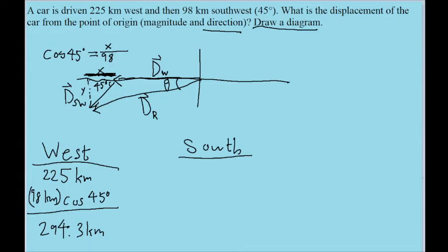But since we're looking at the vertical part, the y part now, we'll have to use the other trig identity, the other trig function, sine. So instead we've got 98 kilometers times the sine of 45 degrees. And that's what's relevant here, which if we put that into our calculator, we find is 69.3 kilometers.